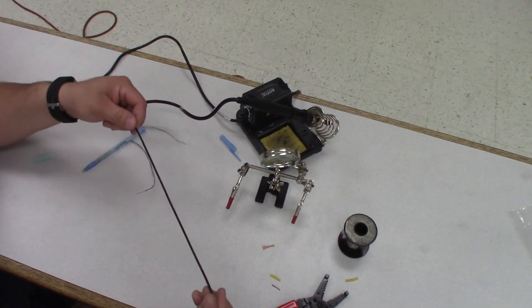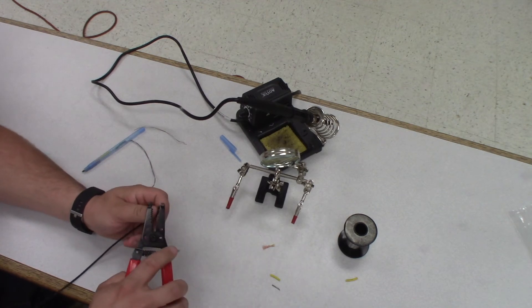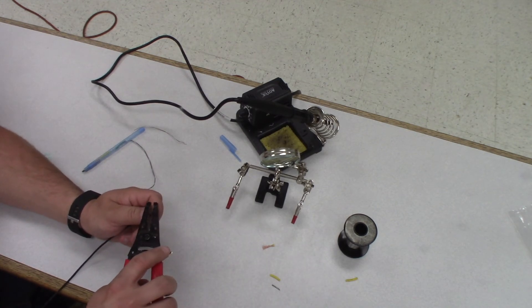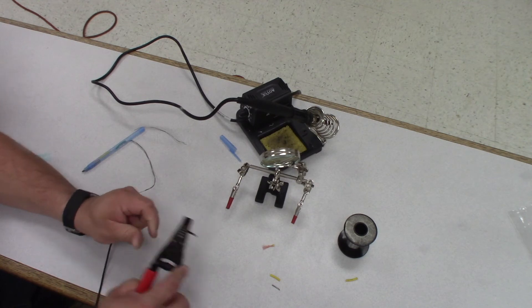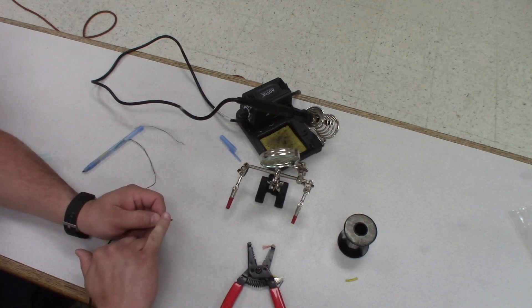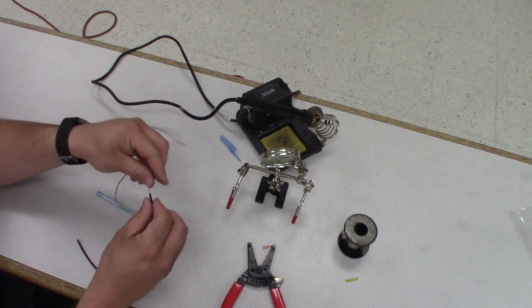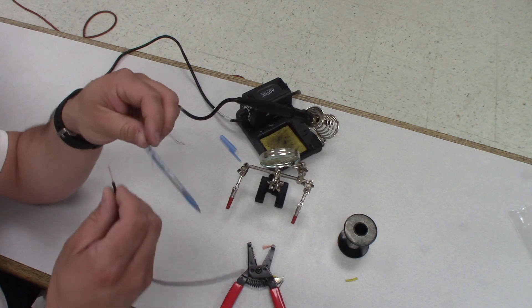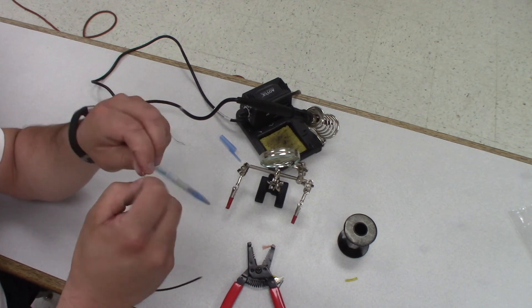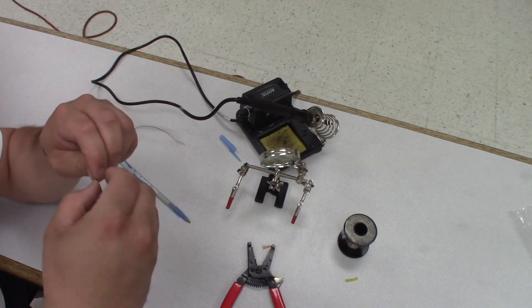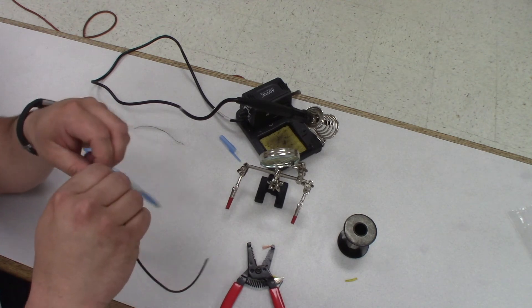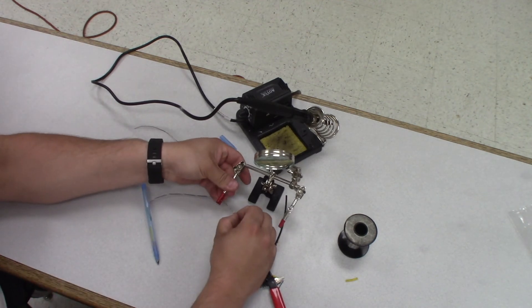Finishing up here, we're going to take our black wire. On one end we're going to strip off about a pinky width of wire. We're going to twist it together. Then we're going to come over with our gray wire off our pen and twist these two wires together and then solder them together.